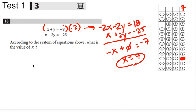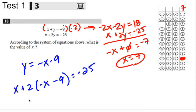The other way, again, there's a bunch of other options. You certainly could have solved this first equation for y. If you'd made the first equation y equals negative x minus 9, then in the second equation you could make this 2 times negative x minus 9 equals negative 25, and then you'd solve.